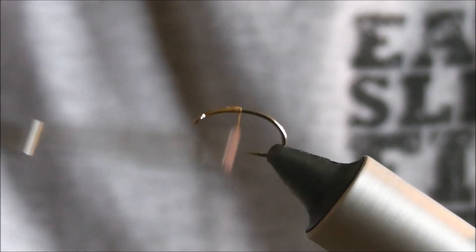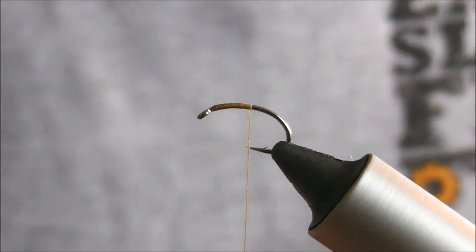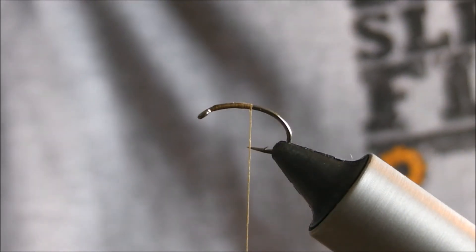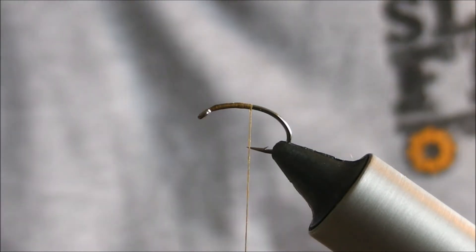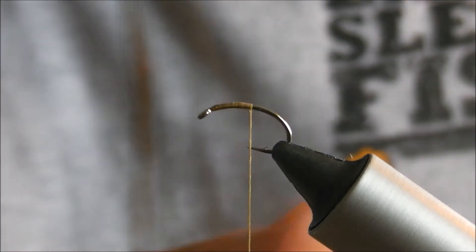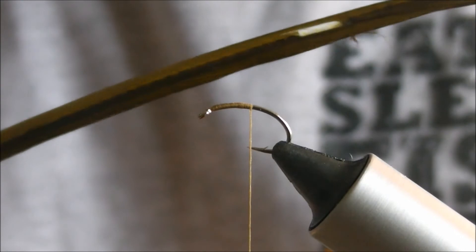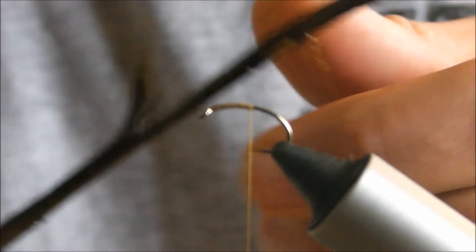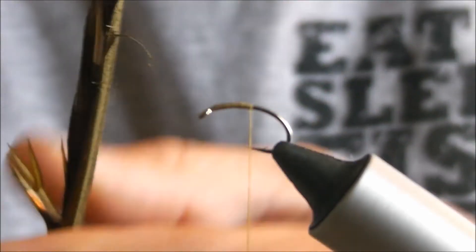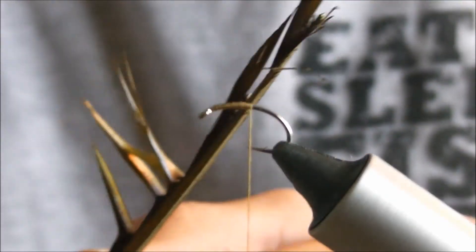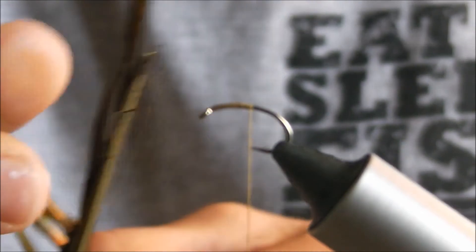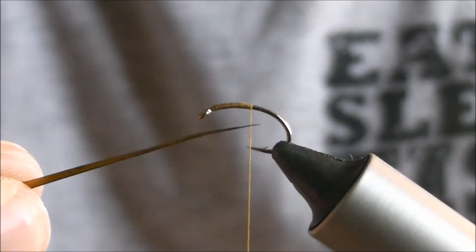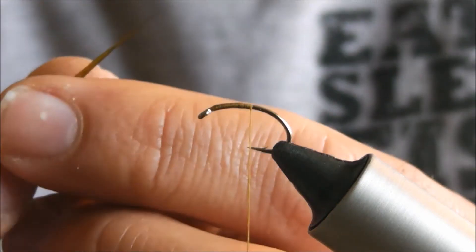Just trim off the waste, go down about halfway, and then grab turkey biot. So that's what turkey biot looks like if you can see that. You get lots of these little very coarse feathers. Some are longer than others so you want to pick the longest when you can.